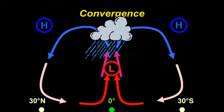But as you go farther away from this particular convergence, we have high pressures — dry areas — that explain the world's deserts. So once again, emphasizing this idea of convergence on this side view of our atmosphere.